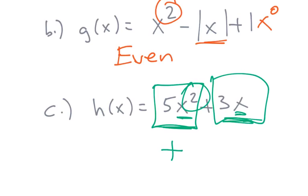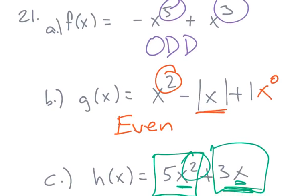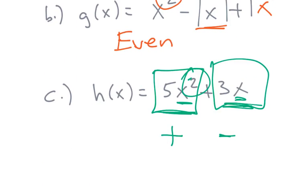So you're going to have something that stays the same and then something that changes, which doesn't fit the definition of odd or even. So usually when you have an even and an odd exponent, that just means the function is going to be neither.